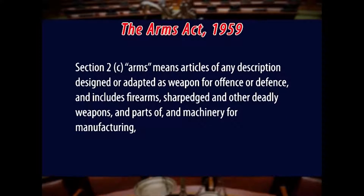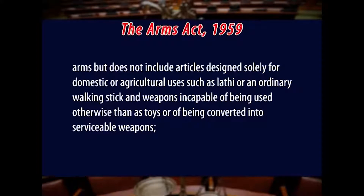Section 2C defines arms, which says arms means articles of any description designed or adapted as a weapon for offense or defense, and includes firearms, sharp-edged or other deadly weapons, and parts of machinery for manufacturing arms, but does not include articles designed solely for domestic or agricultural uses, such as a lathe or an ordinary walking stick, and weapons incapable of being used otherwise than as toys, or being converted into serviceable weapons.